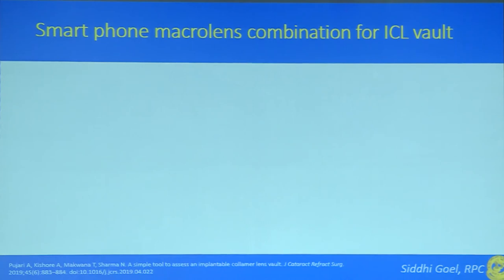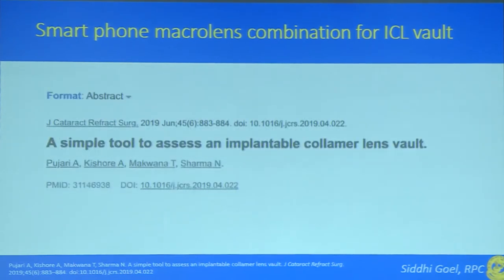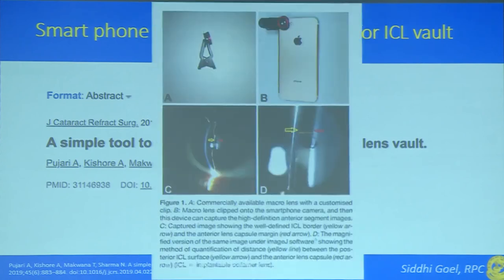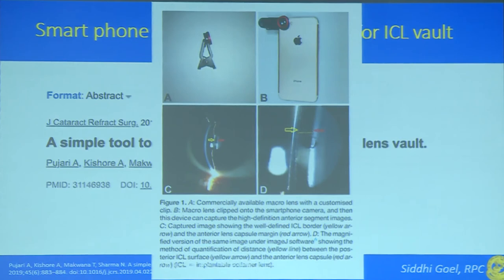I'd also like to highlight a study from our center, again for ICL vaulting, in which we used a smartphone macro lens combination. It was a simple tool to assess the ICL vault. A macro lens was clipped onto a routine phone camera, and we acquired anterior segment slit lamp images through this combination. A magnified image of the same was analyzed using ImageJ software to calculate the ICL vaulting.